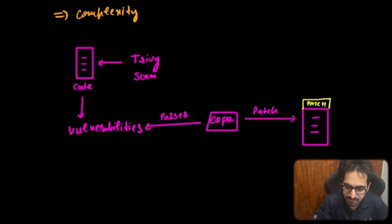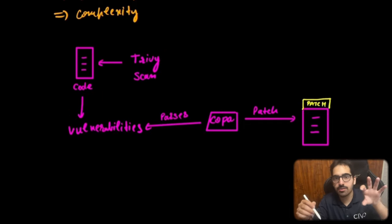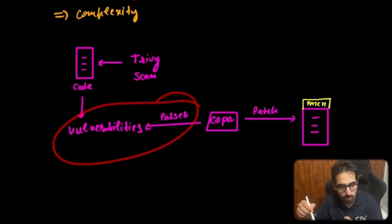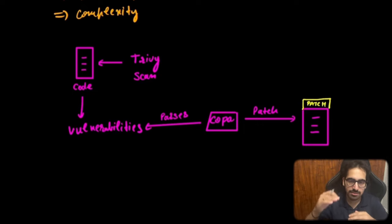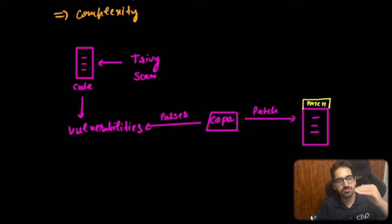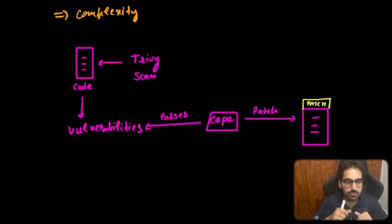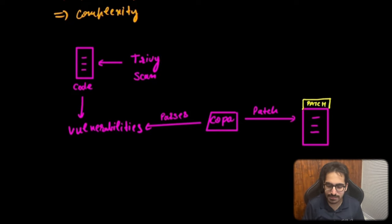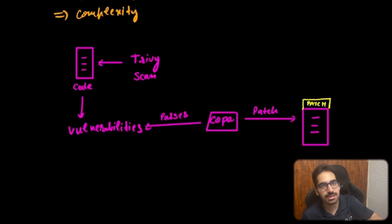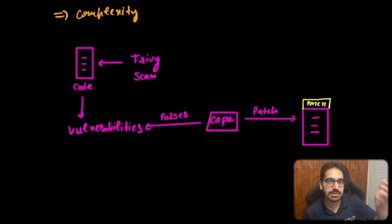On a high level, here's how it works: Trivy scans your code and prepares a vulnerability report. Copa, as a CLI tool, parses that vulnerability report, creates a diff, and then adds a patch layer on top — covering your OS, language, framework, and application layers. It works with the existing vulnerability scanning ecosystem seamlessly, so developers don't need to rebuild images, and no deep remediation knowledge is required since it relies on well-established vulnerability reports from tools like Trivy.